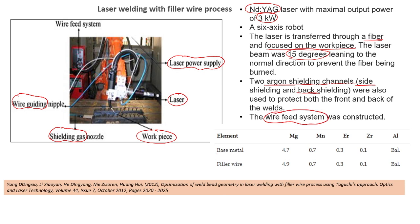The laser is conveyed by fiber and focused on the workpiece at a deliberate angle of 15 degrees to prevent the fiber from burning — a perfectly orthogonal angle risks fiber burnout. The base material is an aluminum alloy containing elements such as magnesium, manganese, and zirconium. A wire feed system was also constructed for this setup.